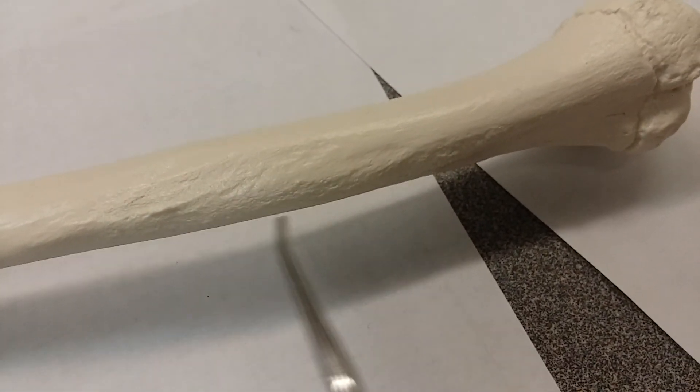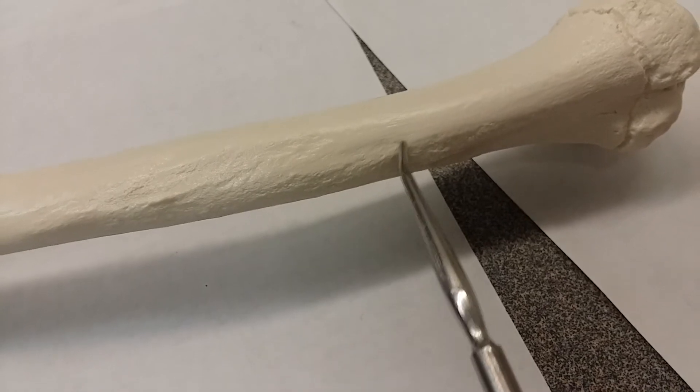Okay. This portion right here is called the deltoid tuberosity. This is where the deltoid muscles attach.